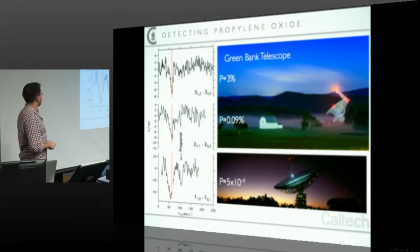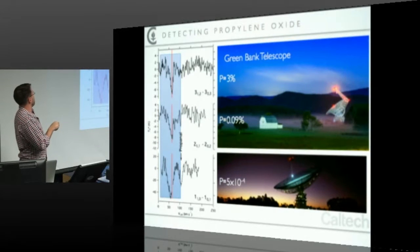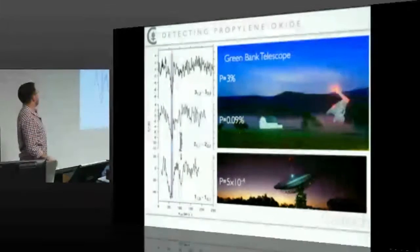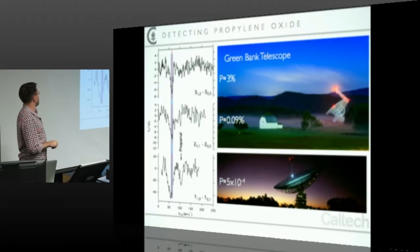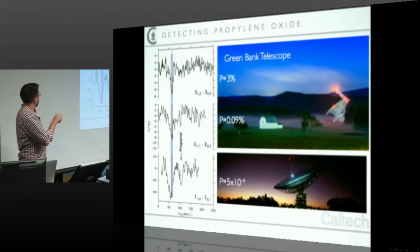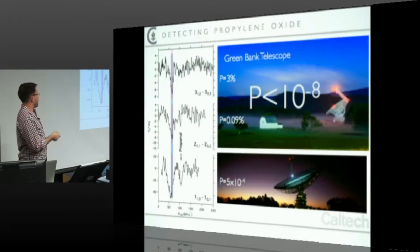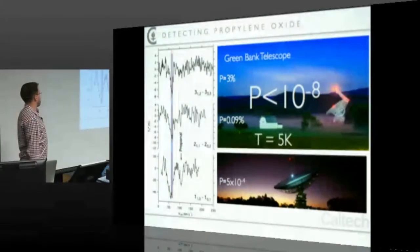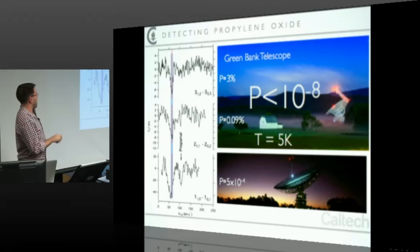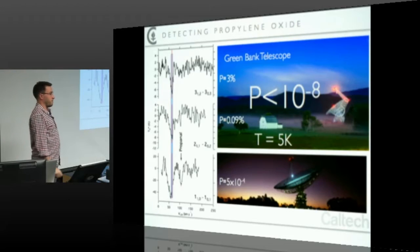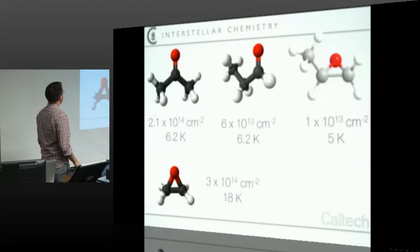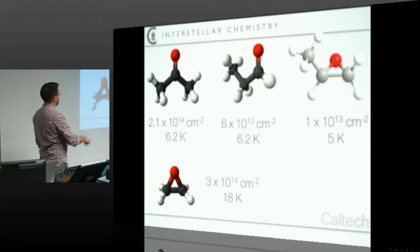Now we can put all three hits together, and the odds that all three coincidentally line up with the transition frequencies for this molecule are essentially null. If you ask what are the odds that you get all three hits within that window, it's about one in a billion. We can also use this to derive the temperature — the gas is extremely cold, about five Kelvin.